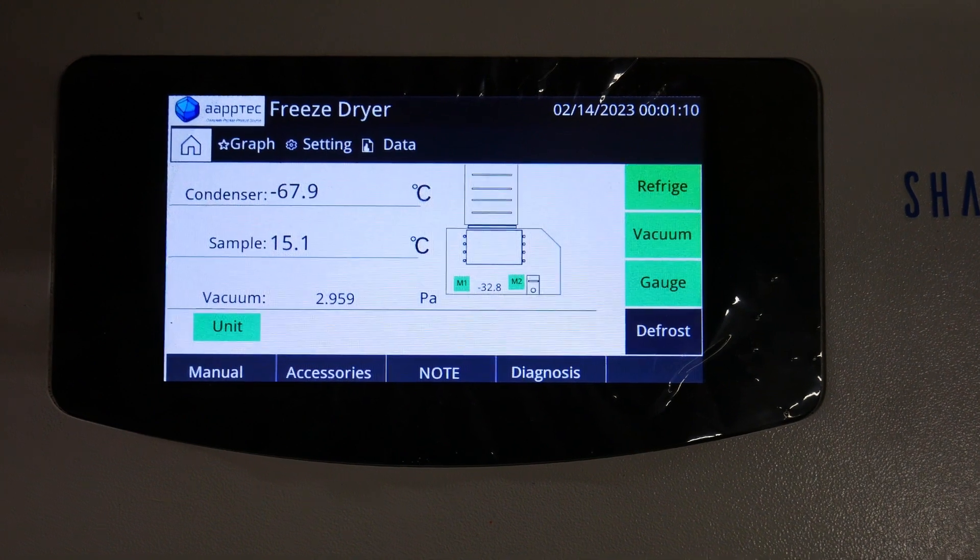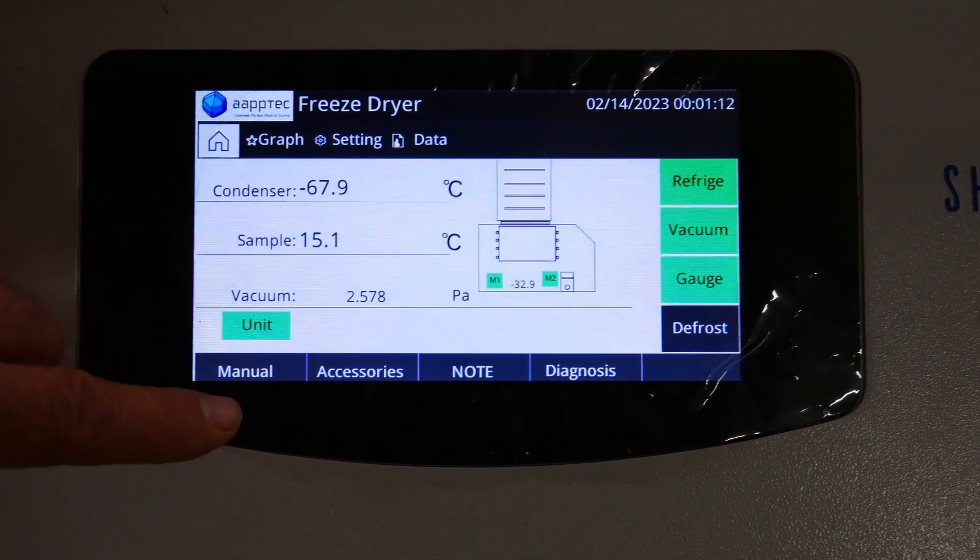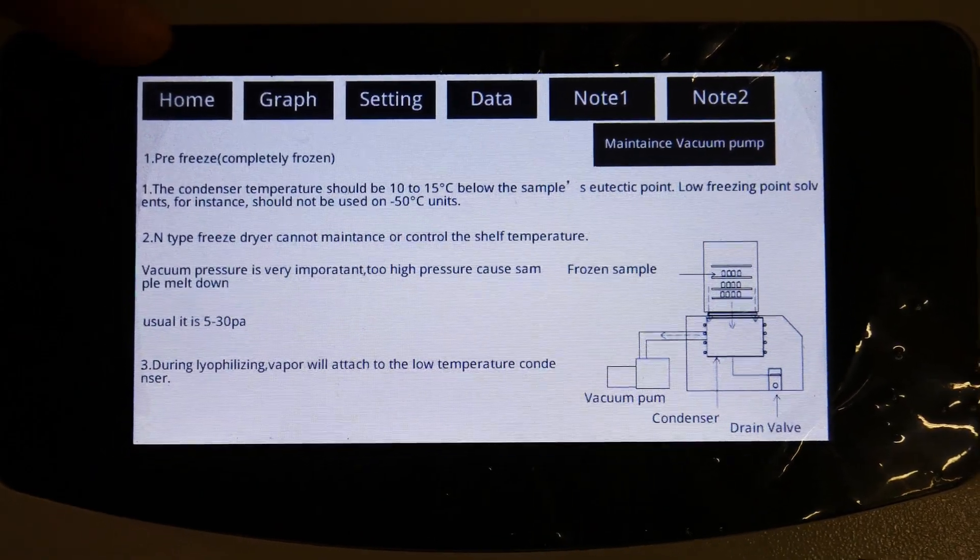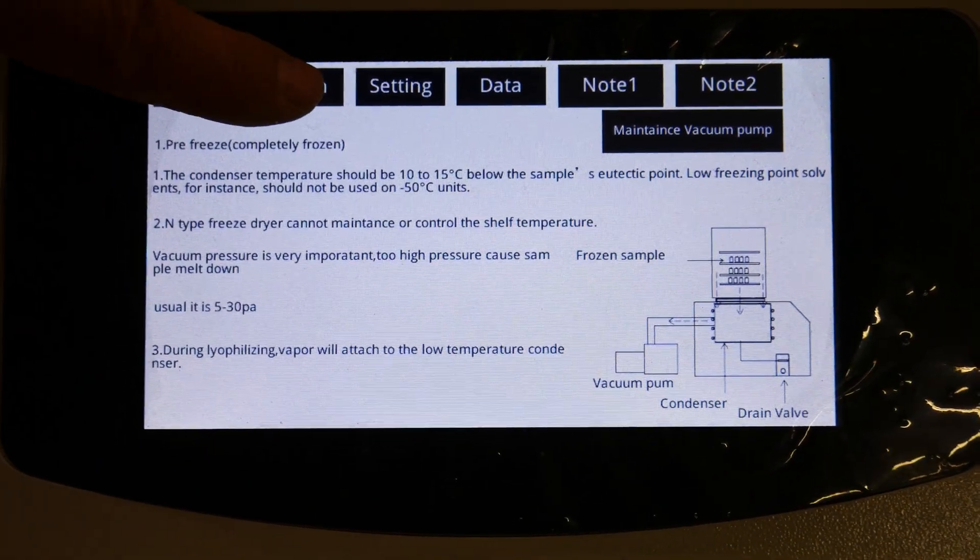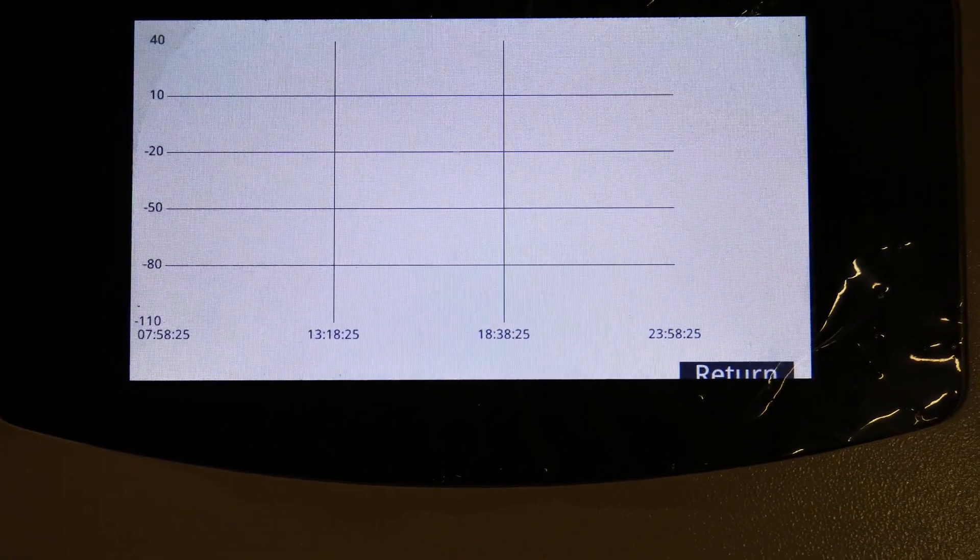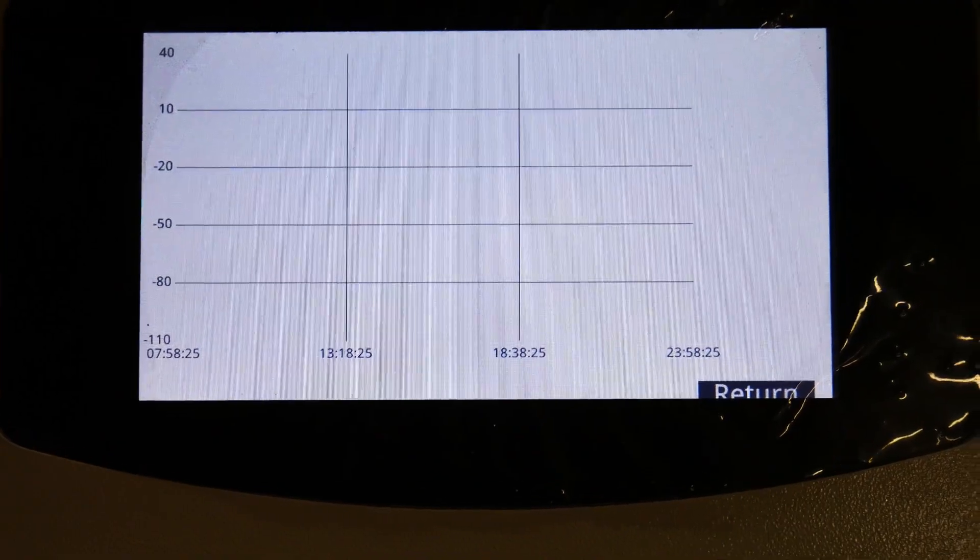You also have other advantages here. If you press here, the system guides you through operating it. For example, the graph shows you how it has been working the past three to four hours. Of course, in this case, it has not been running that long, so that information is not provided yet.